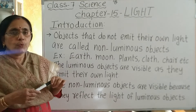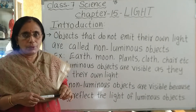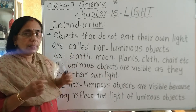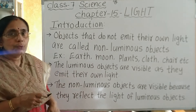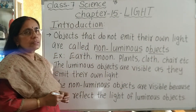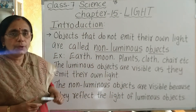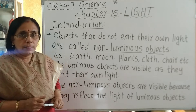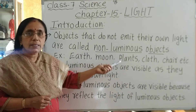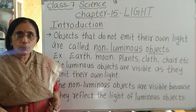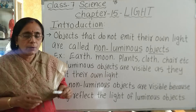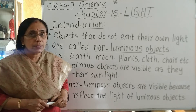The objects that do not emit their own light are called non-luminous objects. Examples include earth, moon, plants, clothes, buildings, and our human body. Maximum number of objects around us are non-luminous objects.